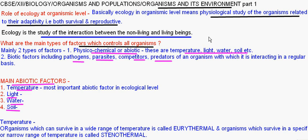In this we are going to only discuss about organismic level ecology. Ecology at the organismic level means the physiological study of organisms related to their adaptivity — both survival as well as reproductive. In simple words, in a specific environment or location, how an organism can survive as well as reproduce successfully is studied in this type of ecology.